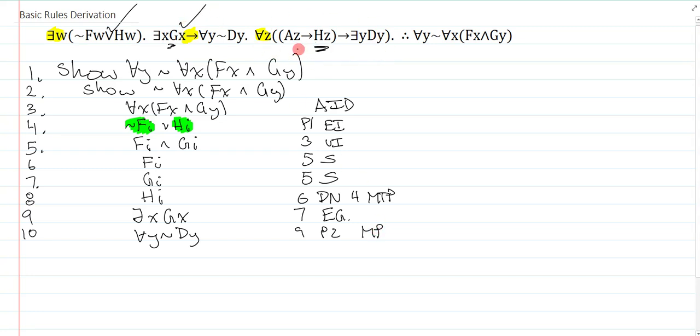Now, I look over here, and I realize this is a universal. So I always ask, what is it that I'm going to instantiate to? The trick here is I already flagged it to myself. I don't have any information for D or for A, but I do have something for H, because I already have HI down here. The likely instantiation that will work here is to I. So I'll just write this as AI arrow HI arrow, there is a Y DY, and that's premise three UI.